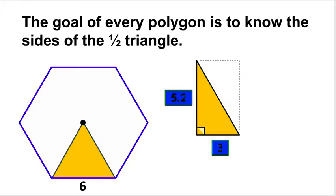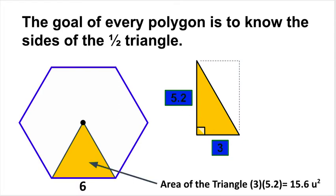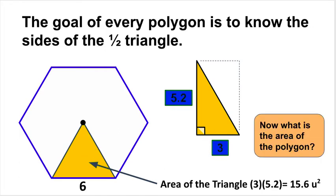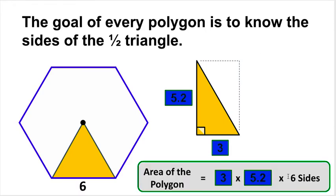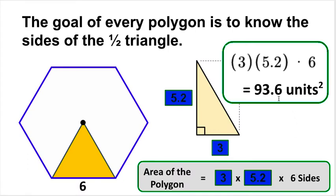If I have a triangle and measure half the base distance — that's three — and then measure straight up to get the height of 5.2, those are my two measurements. Chopping the wedge piece in half and flipping it gives a rectangle, so I go half-base times height: three times 5.2 equals 15.6. That's the area of one wedge piece. Since I have a hexagon, I multiply 15.6 times 6 to get a total area of 93.6 units squared.